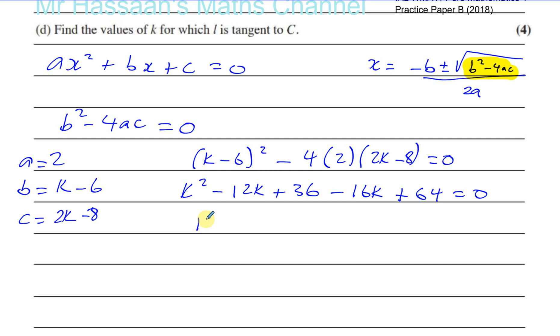So now let's combine the like terms. We've only got k squared. We've got minus 12k minus 16k, which is minus 28k. And we've got 36 plus 64, which is plus 100, is equal to zero. Are there two numbers multiplied together that give you 100 and they add to give you minus 28? I don't think so. So let's just solve this by completing the square.